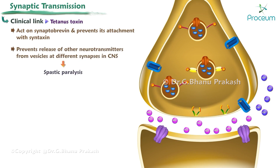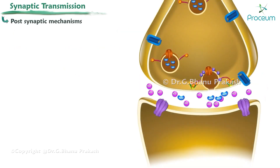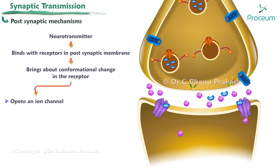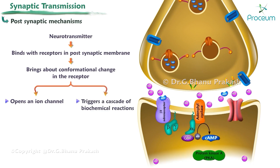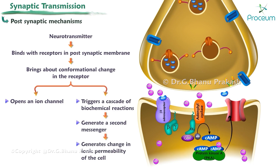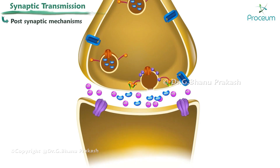Postsynaptic mechanisms: The neurotransmitter binds with receptors in the postsynaptic membrane and brings about a conformational change in the receptor that either opens an ion channel or triggers a cascade of biochemical reactions generating a second messenger. The second messenger in turn generates a change in ionic permeability of the cell. Some transmitter molecules diffuse away from the postsynaptic receptor and are cleared by enzymatic degradation or taken back into the presynaptic cell by endocytosis.